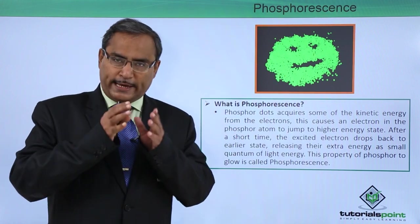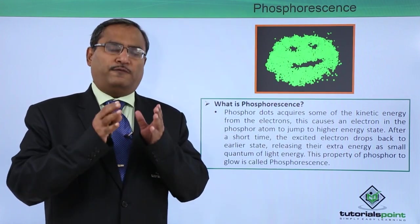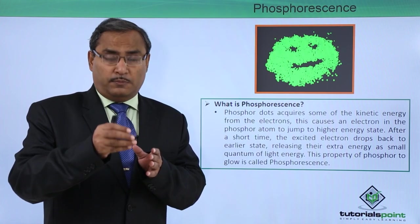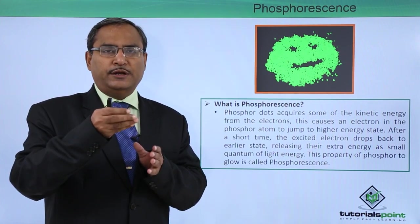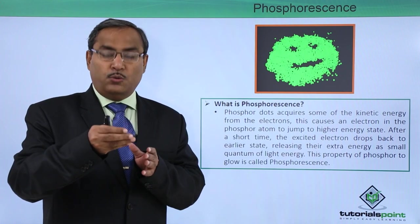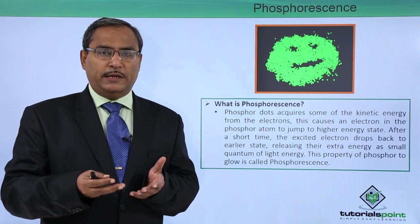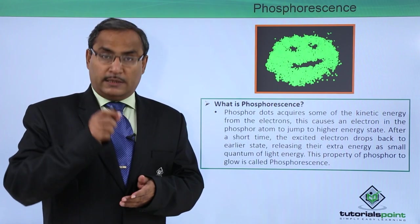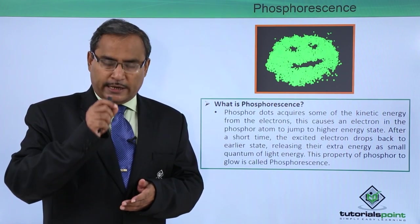Whenever electron beams hit the phosphorescence dots, the phosphorescence gets kinetic energy from the electron gun. How much energy it gains will be decided by the energy in the electron gun.